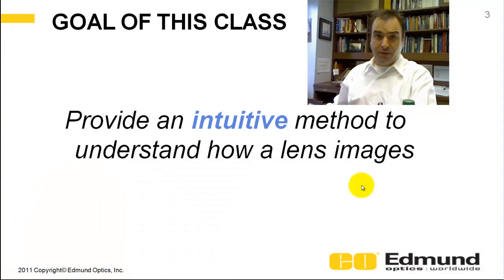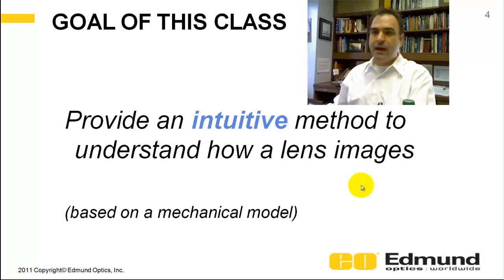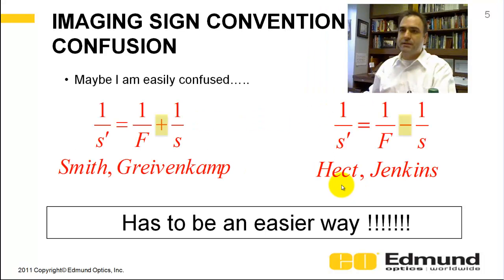Today we're going to provide an intuitive approach to how a lens images. We're going to do that with a mechanical model, and it's really a nomograph, which is kind of a big fancy word for a way to take an equation and make a graph out of it. It's done in such a way that it allows you to really intuitively grasp what a lens is doing.